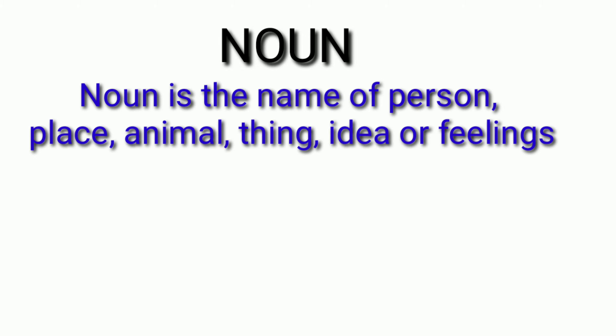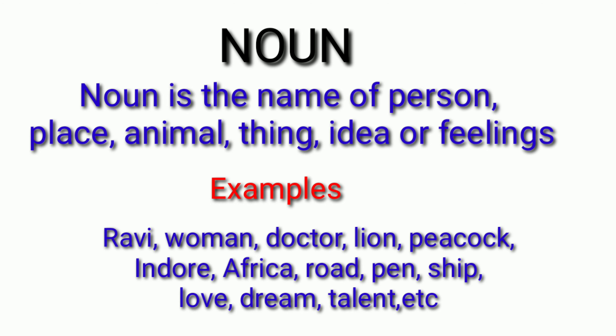First one is Noun. Noun is the name of a person, place, animal, thing, idea or feeling. Examples: Ravi, woman, doctor, lion, peacock, indoor, Africa, road, pen, ship, love, dream, talent, etc.